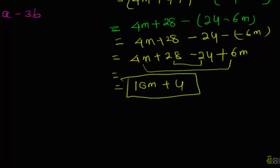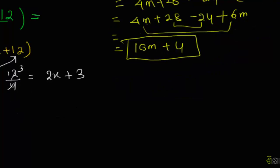Continuing the simplification: we get 10m plus 12 minus 2, which gives us the final answer.